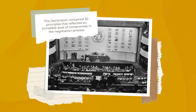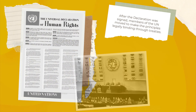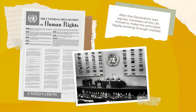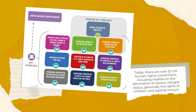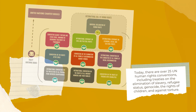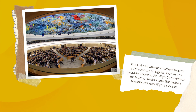The Declaration was the first attempt by states to specify what the UN meant by human rights, and it contained 30 principles that reflected an incredible level of compromise in the negotiation process. After the declaration was signed, members of the UN moved to make the principles legally binding through treaties. Today, there are over 25 UN human rights conventions, including treaties on the elimination of slavery, refugee status, genocide, the rights of children, and against torture.